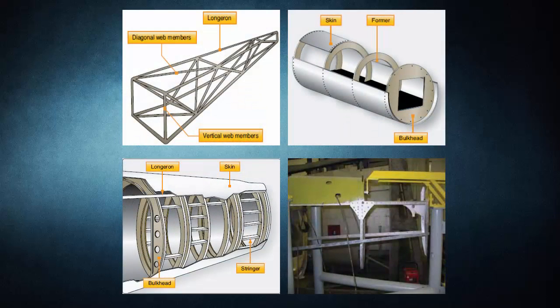The fuselage is the main structure or body of the fixed-wing aircraft. It provides space for cargo, controls, accessories, passengers, and other equipment. In single-engine aircraft, the fuselage houses the power plant; in multi-engine aircraft, the engines may be in the fuselage, attached to the fuselage, or suspended from the wing structure. There are two general types of fuselage construction: truss and monocoque.